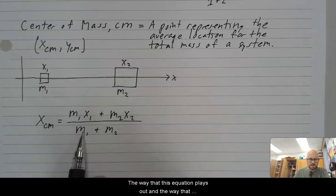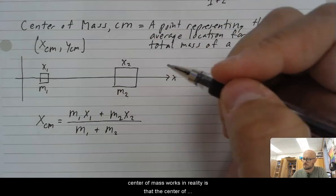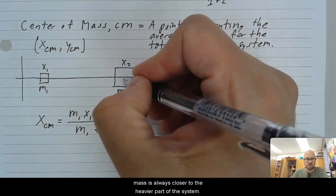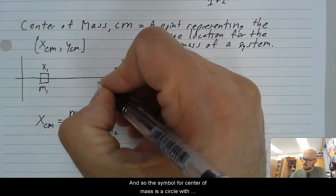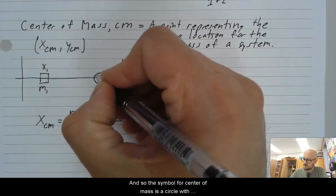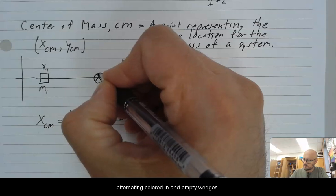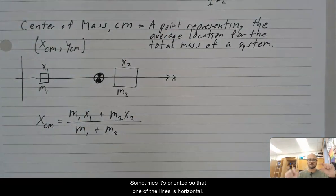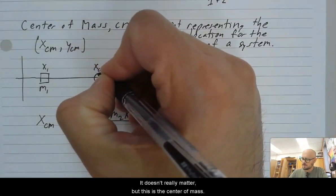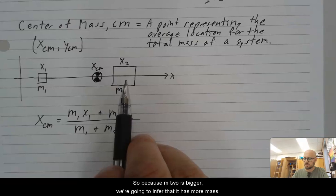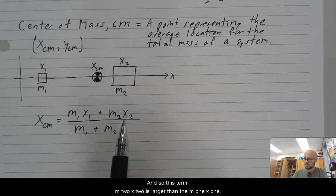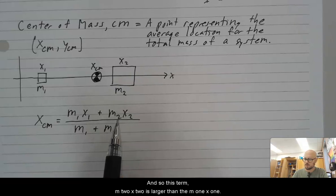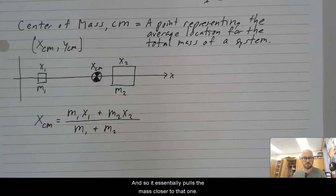The way that this equation plays out, and the way that center of mass works in reality, is that the center of mass is always closer to the heavier part of the system. And so the symbol for center of mass is a circle with alternating colored in and empty wedges. Sometimes it's oriented like this. Sometimes it's oriented so that one of the lines is horizontal. It doesn't really matter. But this is the center of mass. So because m2 is bigger, we're going to infer that it has more mass. And so this term, m2x2, is larger than the m1x1.